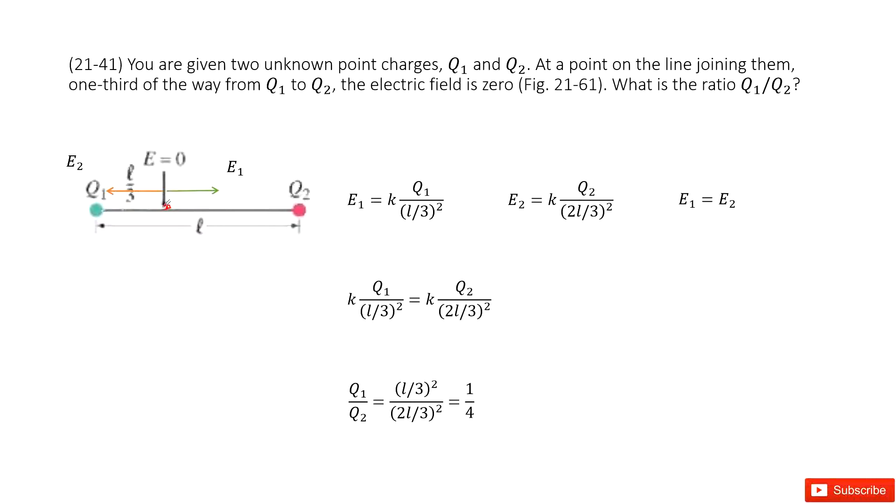Now we consider q1 as a positive point charge, so the electric field will be radially outward along the horizontal x-axis, pointing to the right. For q2, also a positive charge, the electric field will be radially outward and pointing to the left.